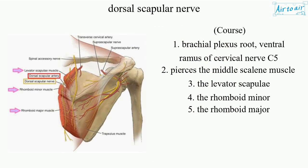Course: 1. Brachial Plexus Root — Ventral Ramus of Cervical Nerve C5. 2. Pierces the Middle Scalene Muscle. 3. The Levator Scapulae. 4. The Rhomboid Minor. 5. The Rhomboid Major.